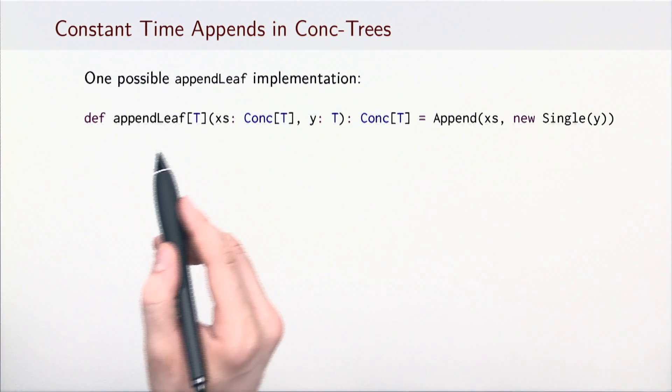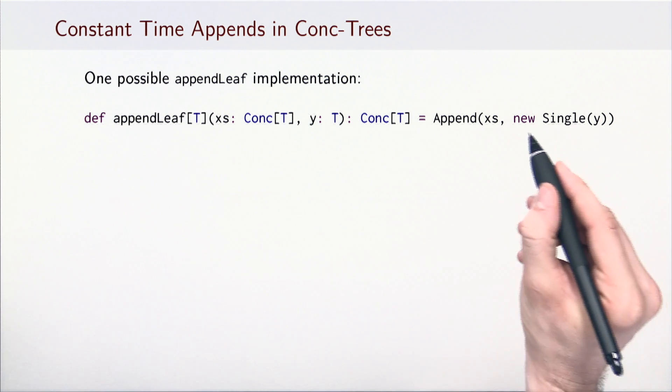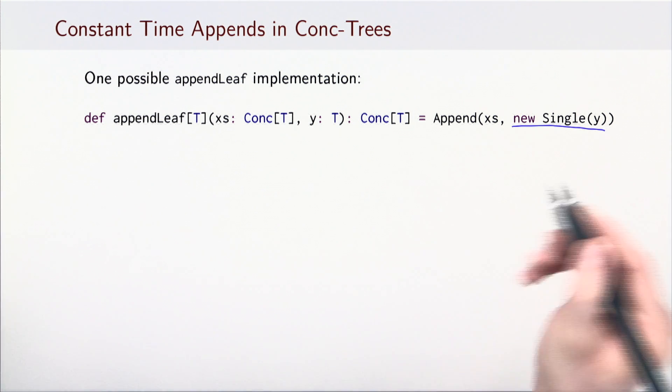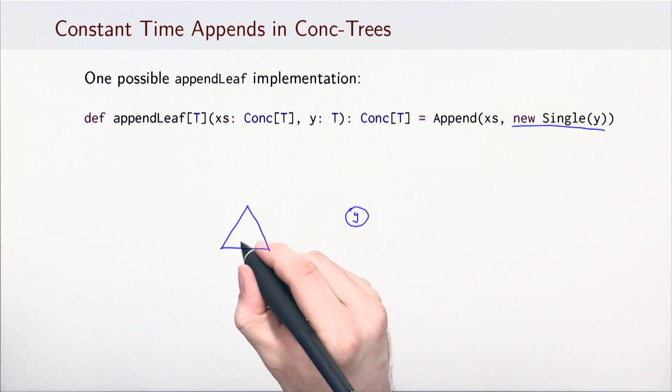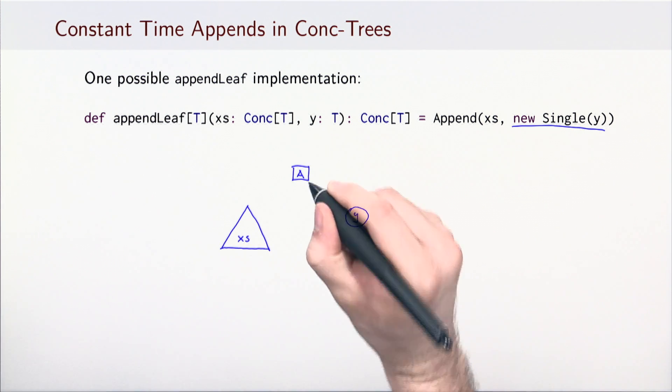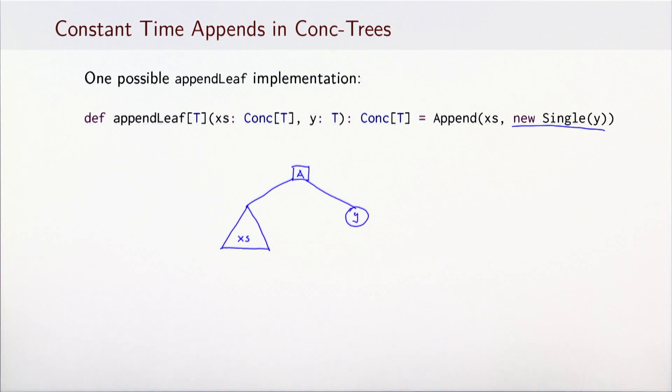With this newly introduced node type, here is one possible implementation of append-leaf. This method first creates a single node, and then it creates a new Append node to link them together. This method allocates two objects in total, so the total number of computational steps it takes is constant and does not depend on the size of the tree.